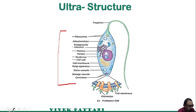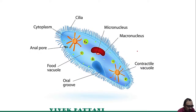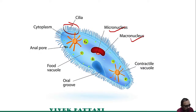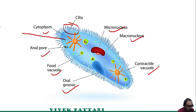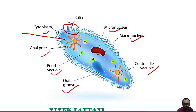There is no presence of chlorophyll in protozoa. This is a basic diagram of a Paramecium. You can clearly see the cilia, a micronucleus, a macronucleus, contractile vacuole, oral groove, food vacuole, anal pore, and cytoplasm. Different organelles have different types of functions.